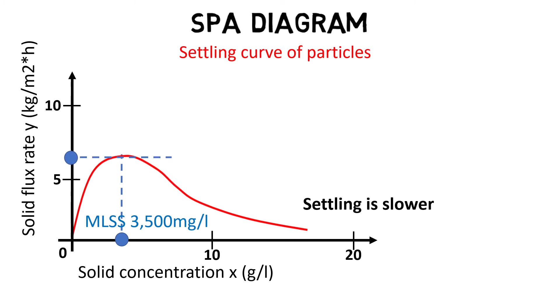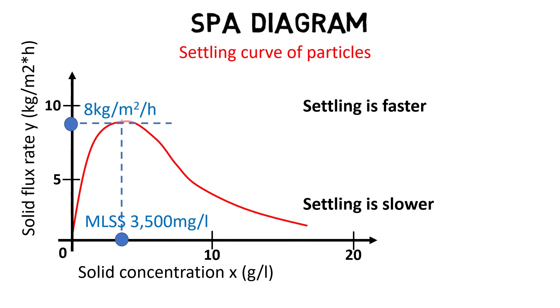If the curve is higher, we have more settled solids per hour, therefore the settling is faster. The settling curve is determined by settling tests based on the SVI.